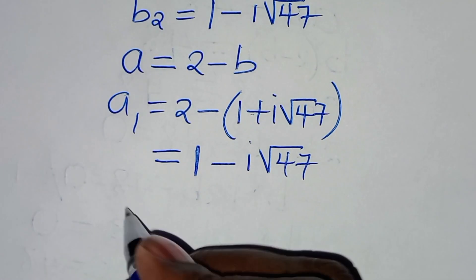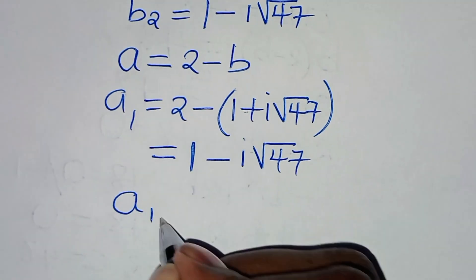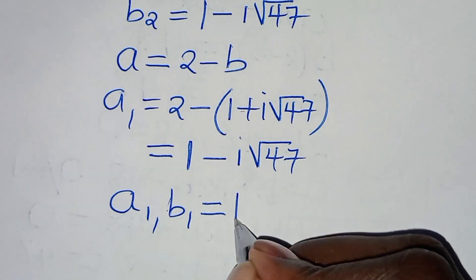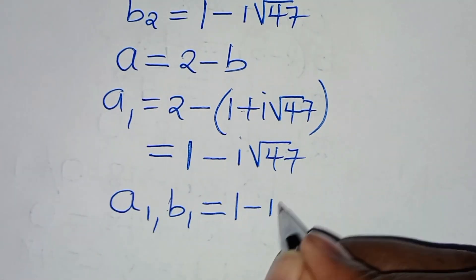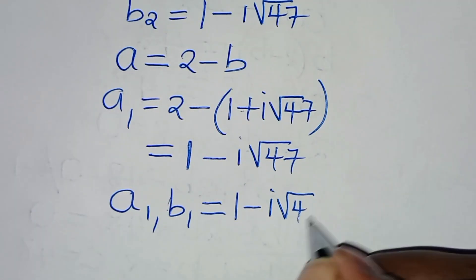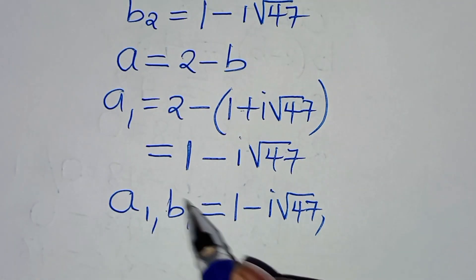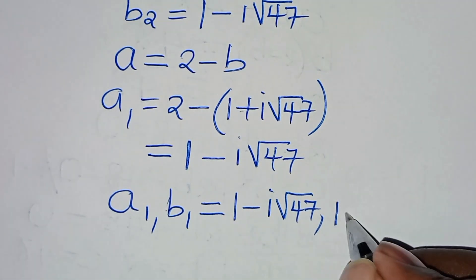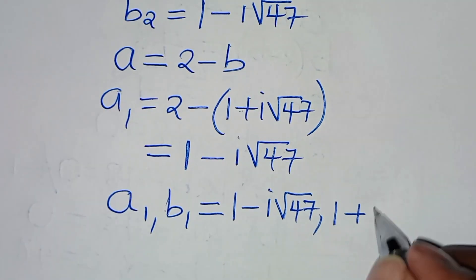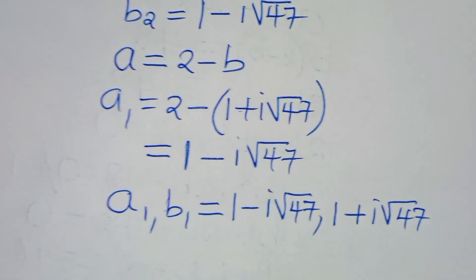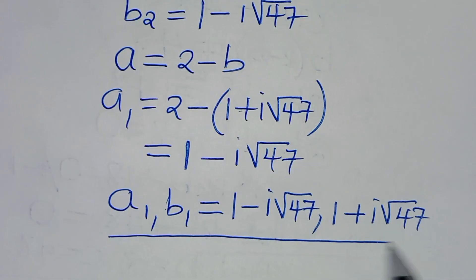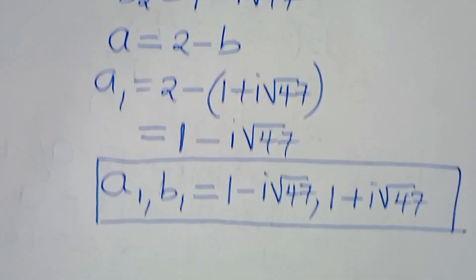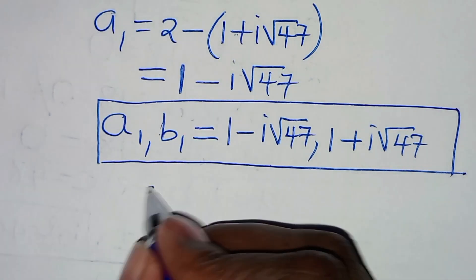Therefore, the first set of solutions is: a1 equals 1 minus i√47, and b1 equals 1 plus i√47.